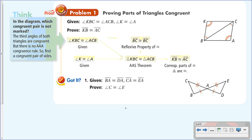Here's a proof explaining that. We have two triangles and we want to prove KB congruent to AC. This is a flow proof — you can use whatever style you want. The given statements are: angle KBC is congruent to angle ACB, and angle K is congruent to angle A. We can't use angle-angle-angle because that does not prove congruence — it only proves similarity. So we need another way.